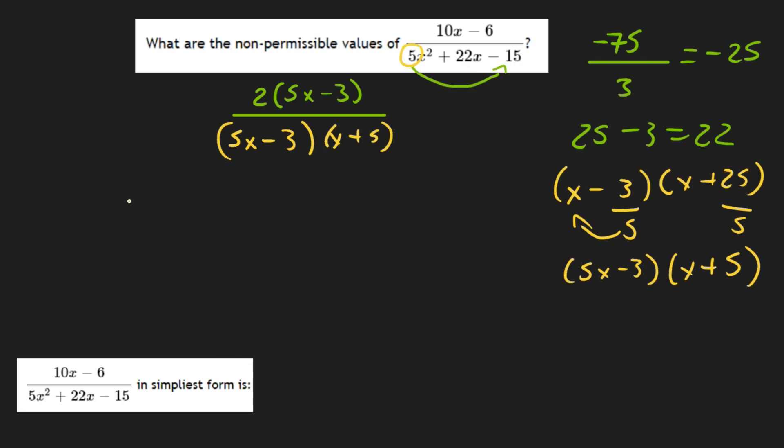x plus 5. Now we can see that a non-permissible value would be x cannot equal 3 over 5 and negative 5.